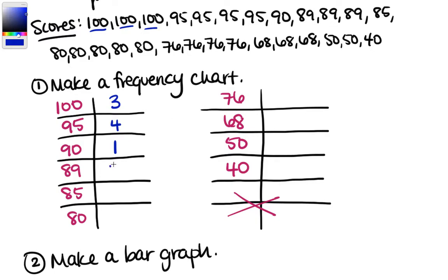So 89 appears 3 times, 85 is 5, 76 appears 4 times, 68 is 3, 50 is twice, and 40 is once. There's our frequency chart.